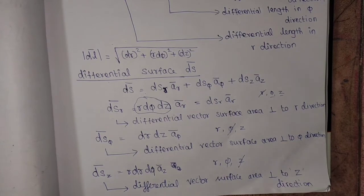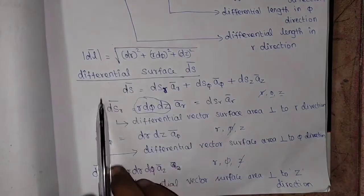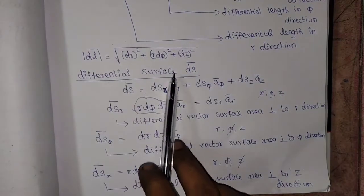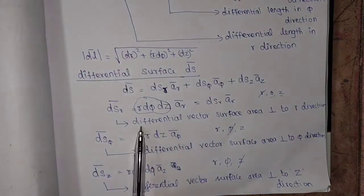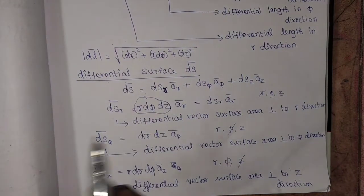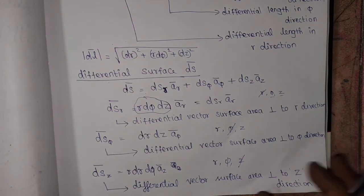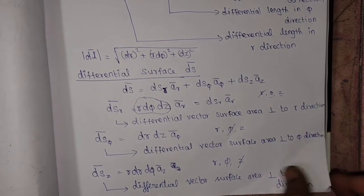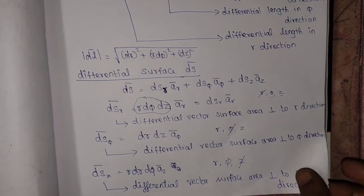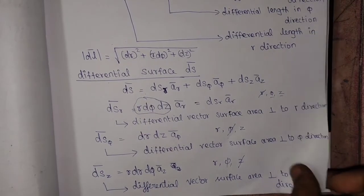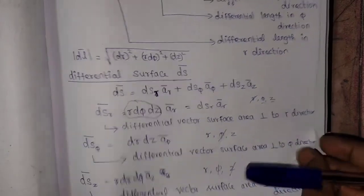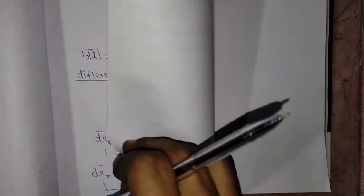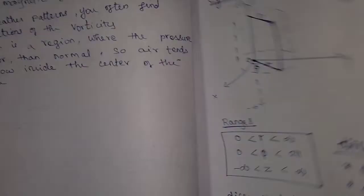That covers differential length and differential surface — both are vector quantities. Now we are going to switch over to the last differential element, which is differential volume.